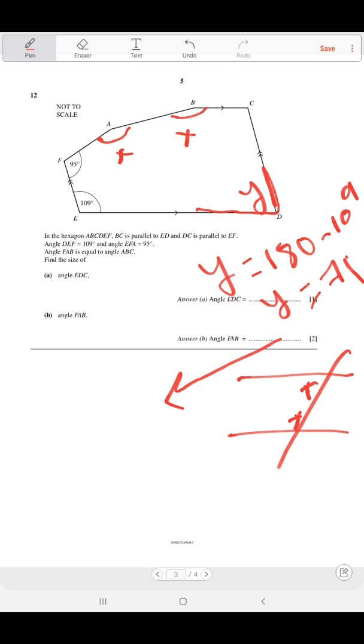FAB is the same as ABC. We found the value of Y is 71. Also the value of C is 109 because it's also co-interior, angle BCD and CDE.